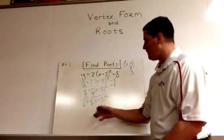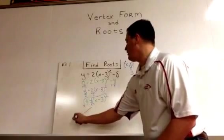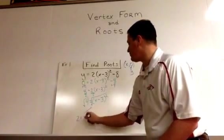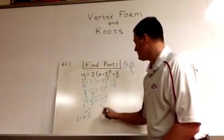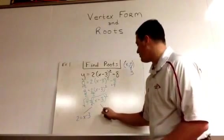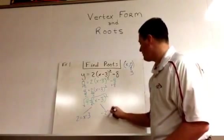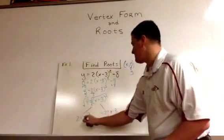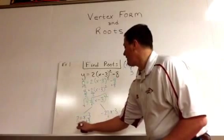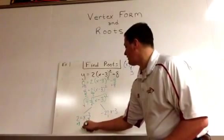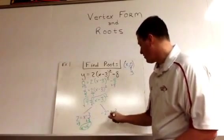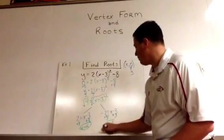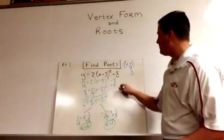Since this 4 is positive we're going to get two possible answers. Square root of 4 is 2 equals x minus 3, or square root of 4 can also be negative 2 equals x minus 3. From here we're going to add 3 on both sides, and x is 5 or x is 1, which gives us two possible roots.